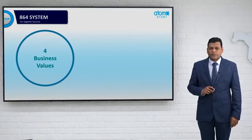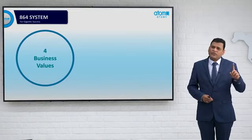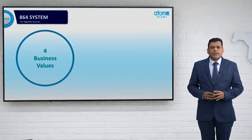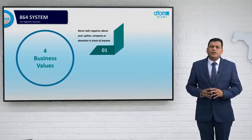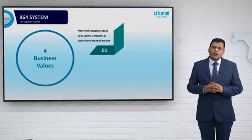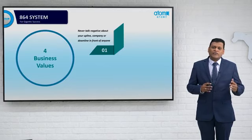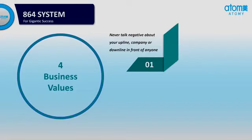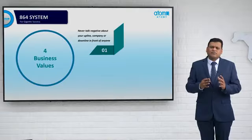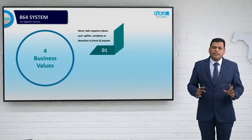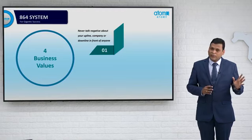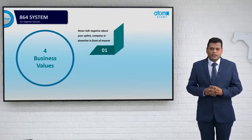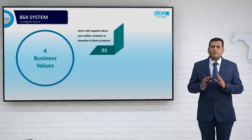The last part of the 864 system is the 4 business values. The first business value is: never talk negatively about your upline, downline, or the company in front of anyone. If you talk negatively about your downline in front of your upline, negativity surrounds everything. Never talk negatively in front of anyone — not your upline, not your downline, and not about the company. This is the most important business value.